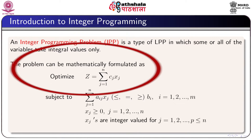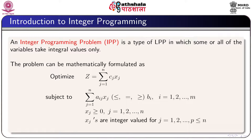The problem can be mathematically formulated as: optimize — that is maximize or minimize — z equal to summation j equals 1 to n of cj xj, subject to the constraint summation j equals 1 to n of aij xj which is less than, equal to, or greater than bi for i equal to 1 to m, and xj greater than or equal to 0 for j equal to 1 to n. Here xj takes integral values for j equal to 1 to p, where p is less than or equal to n.